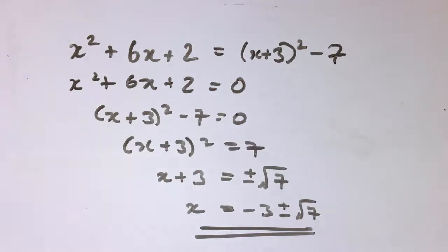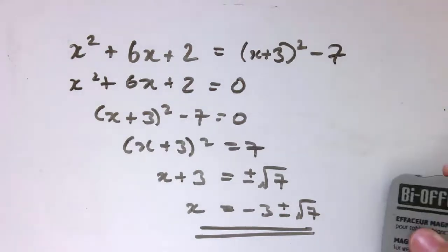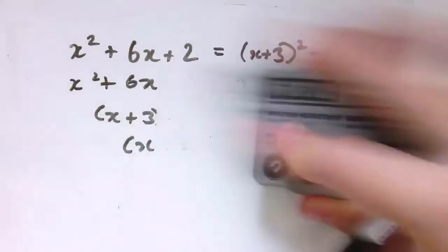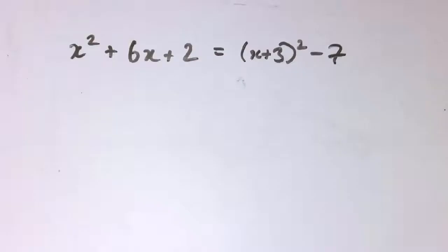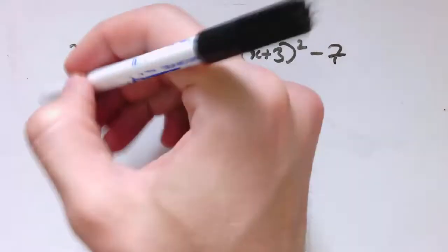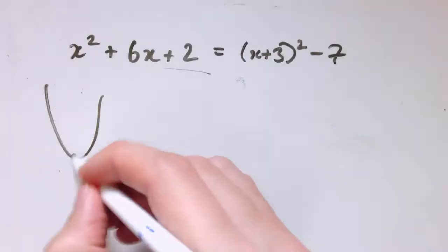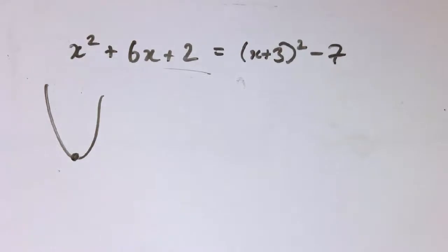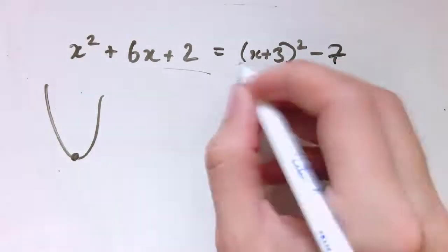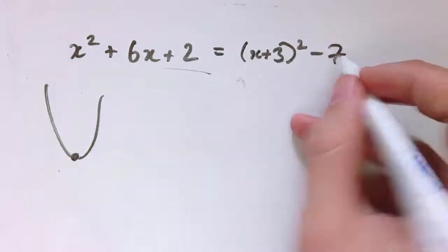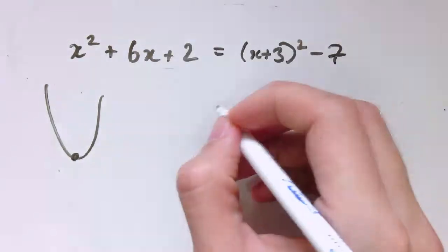And the other thing that we can get nicely from this form is if I... Let's just go back to this completed square form. I can see what the sort of biggest or smallest value this can be. Now, I know this is a positive quadratic, so it's got that sort of shape. So it's going to have a minimum value somewhere. The question is where does that minimum value occur? Well, if the function is x + 3 squared minus 7.